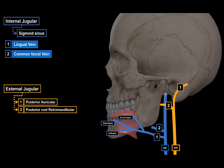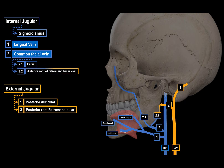Then there's the common facial vein, which is formed by two veins: the facial vein and the anterior root of the retromandibular vein. The anterior root of the retromandibular vein and the posterior root of the retromandibular vein come together to form the retromandibular vein.